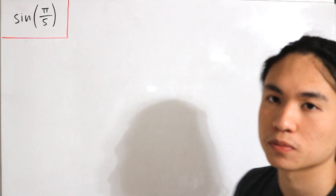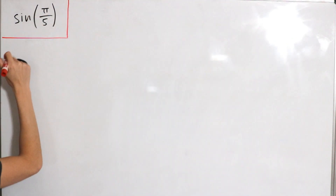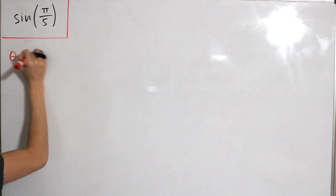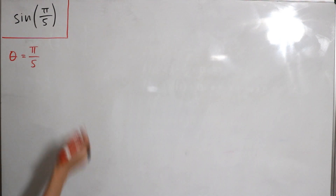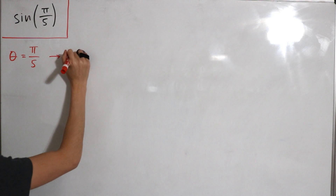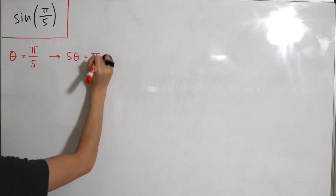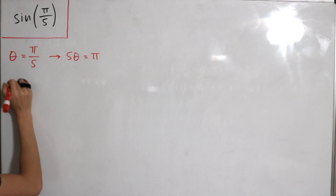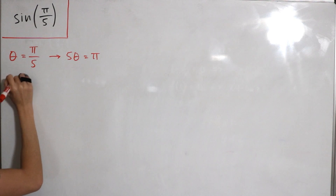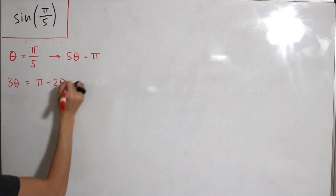Let's get started. Suppose we let our input θ equal π over five. Then if we solve for π on its own, we see that five times θ equals π. Now let's do a little algebraic manipulation: subtract two θ from both sides, so from the left we have three θ is equal to π minus two θ.